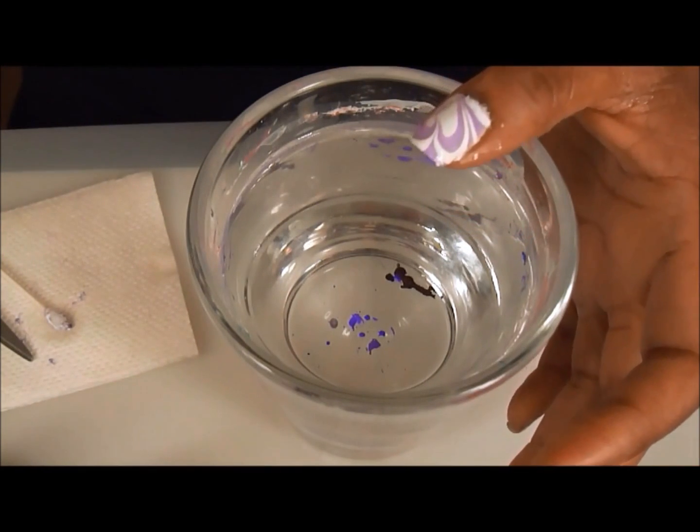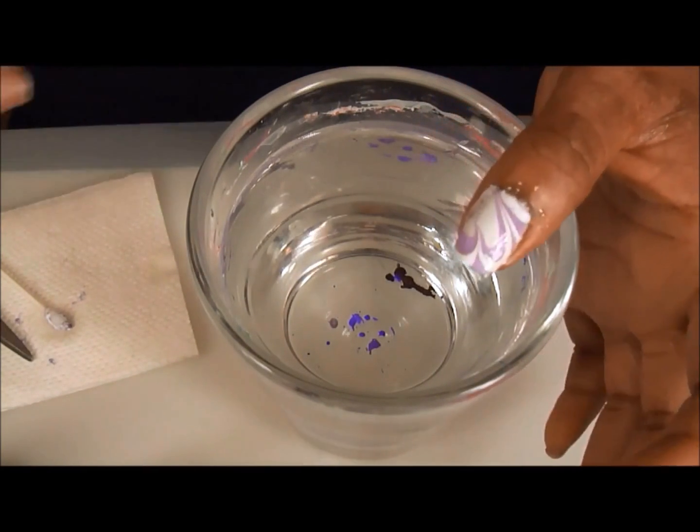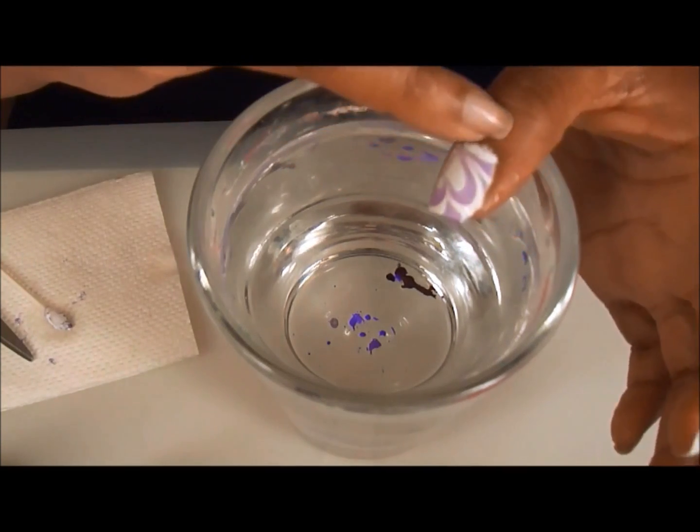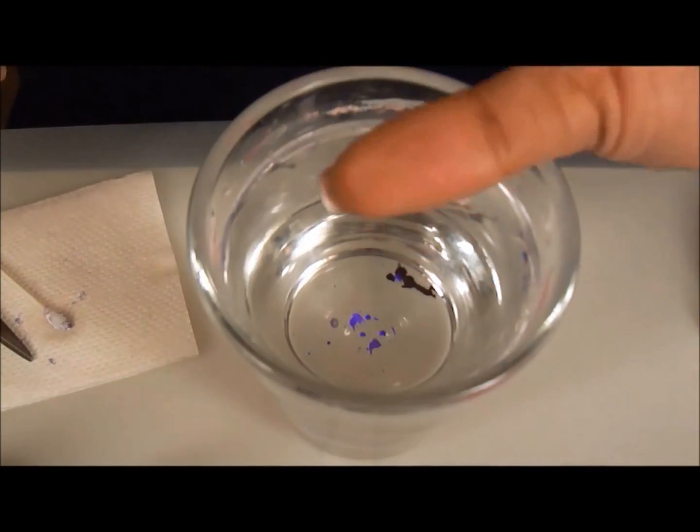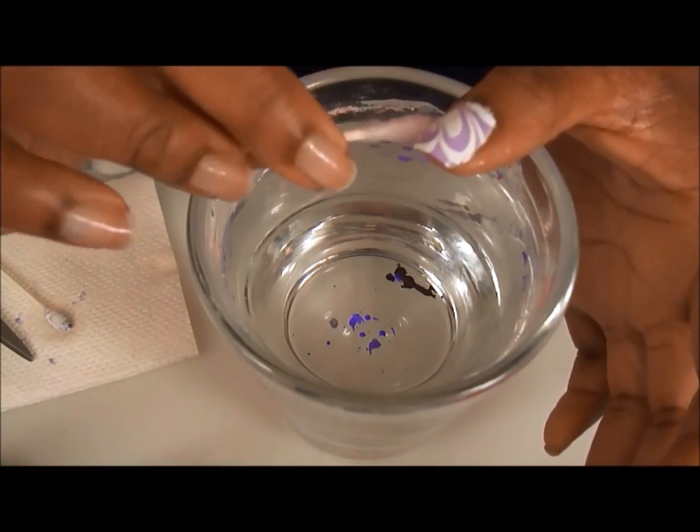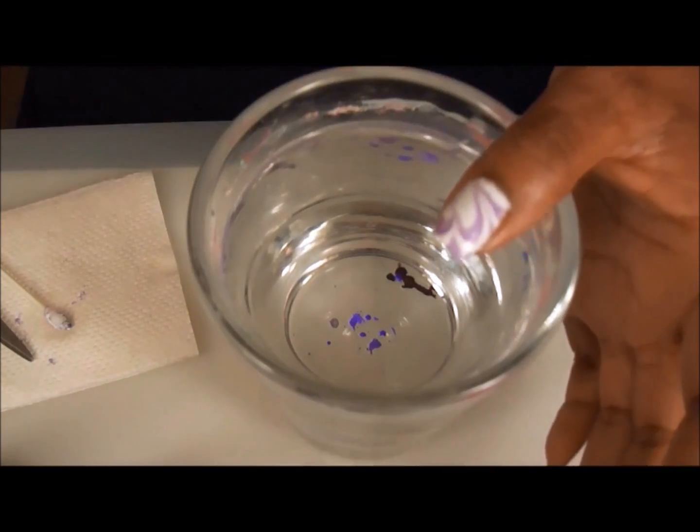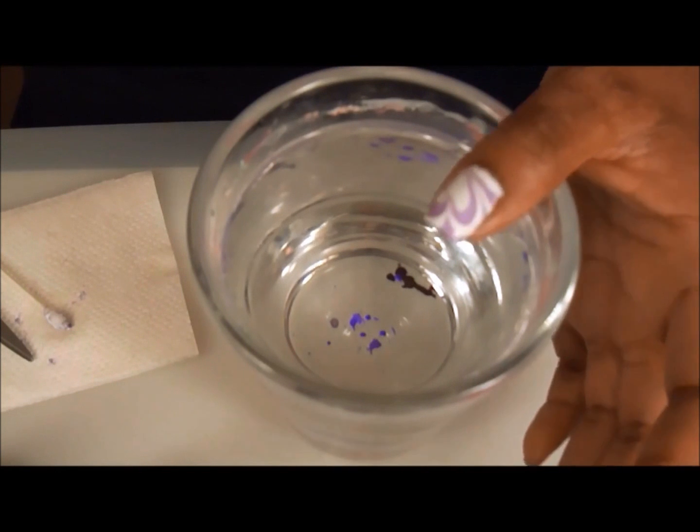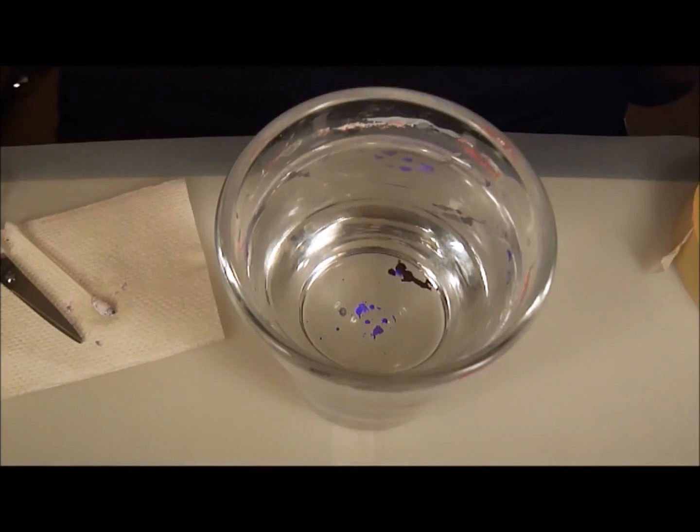So you see now, all I literally have to do is just clean this little bit of excess. That's it. There's no polish on the whole rest of my nail. My design looks cute. I'm going to wait for that to dry and then I'm just going to put a top coat on that.